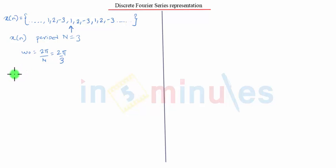Now considering only one period, that is x equals {1, 2, minus 3}, we find out the Fourier coefficients using the general formula. We directly substitute the values in it. So cₖ is given by 1 by 3 sigma n equals 0 to 2, x of n e raised to minus j 2π k n by 3.